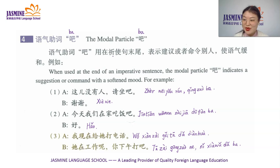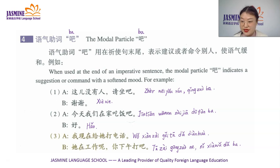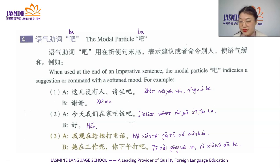Now let's see grammar notes 4: the modal particle 吧. When used at the end of an imperative sentence, the modal particle 吧 indicates a suggestion or command with a softened mood.